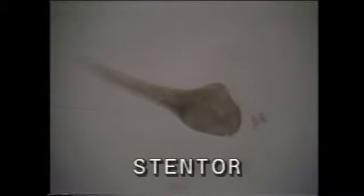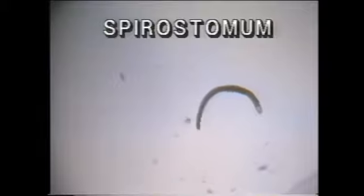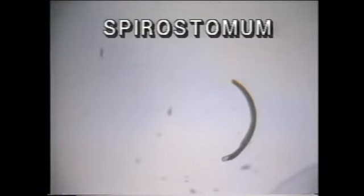Another ciliate worth observing is the stentor. It will either be trumpet-shaped or resemble a ball when disturbed, and uses cilia on its widest end to move about and gather food. Sometimes it anchors itself to a solid object on the other end. One of the largest ciliates is the sporostomum; compared to the previous two, it's difficult to see inside this protozoan's body.